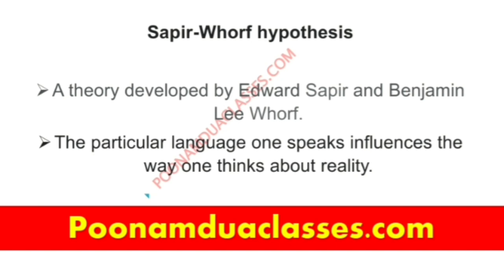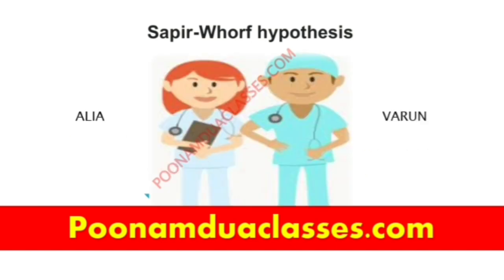Which way we think depends on our language and our thoughts. To understand this, consider two people — Varun and Alia — two best friends who work at the same hospital. Though Varun initially wanted to be a doctor, he later changed his mind and decided to be a nurse like Alia. Varun was often teased about his career choice; he was told that a man should be a doctor, not a nurse, by several acquaintances and friends.